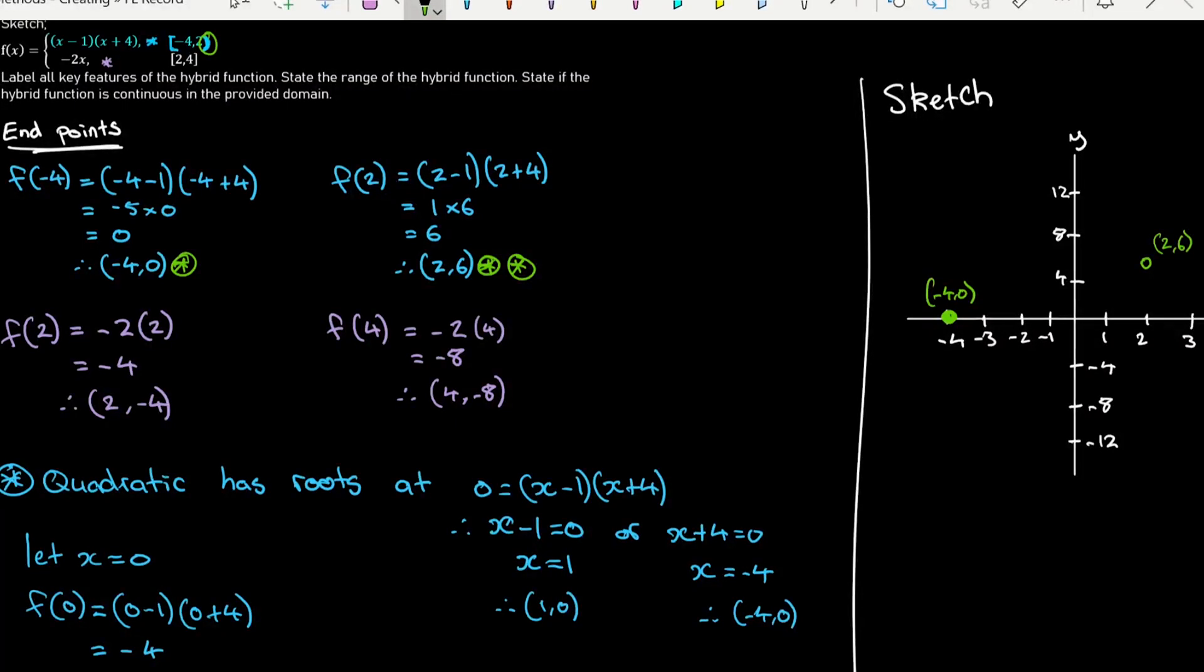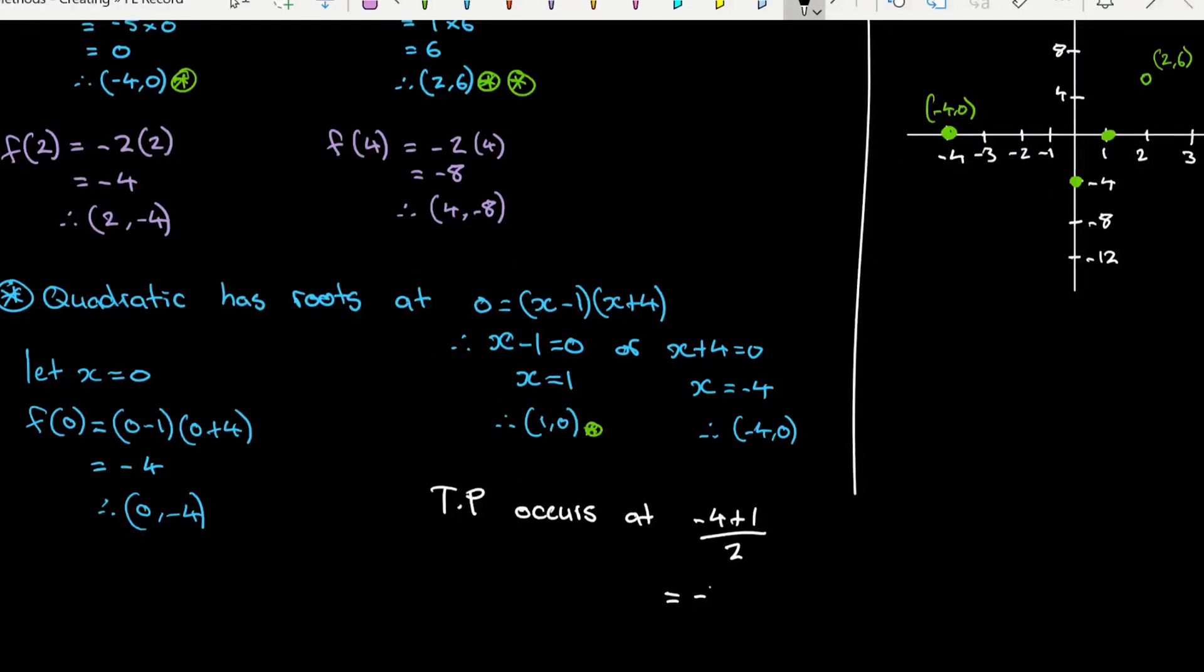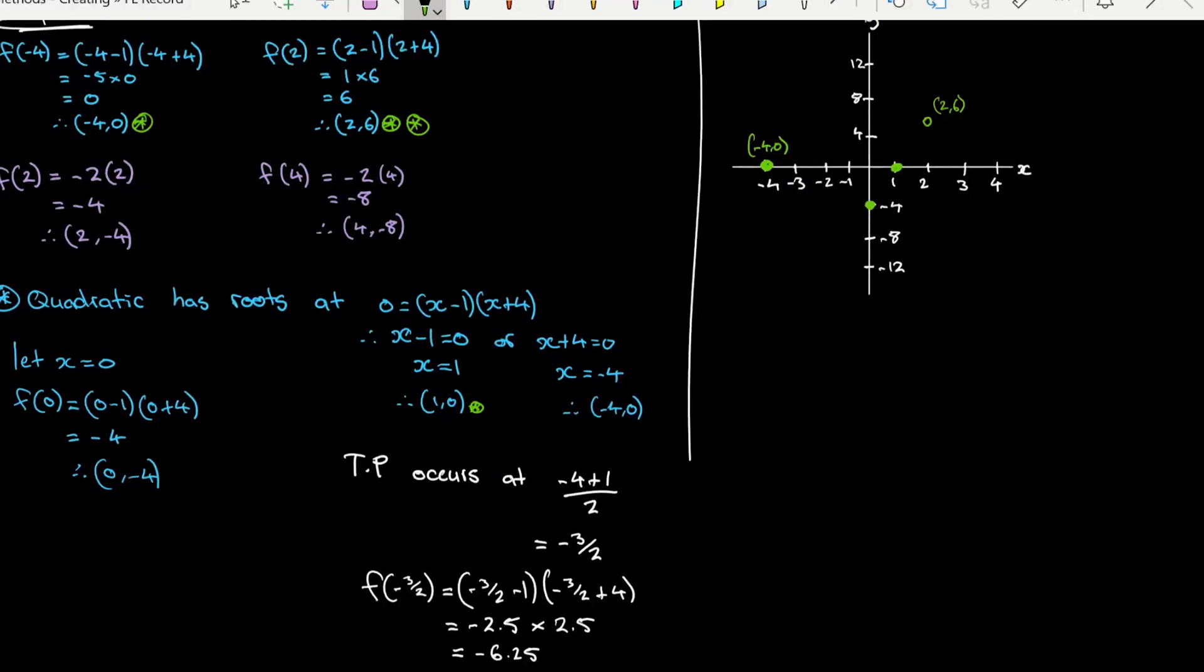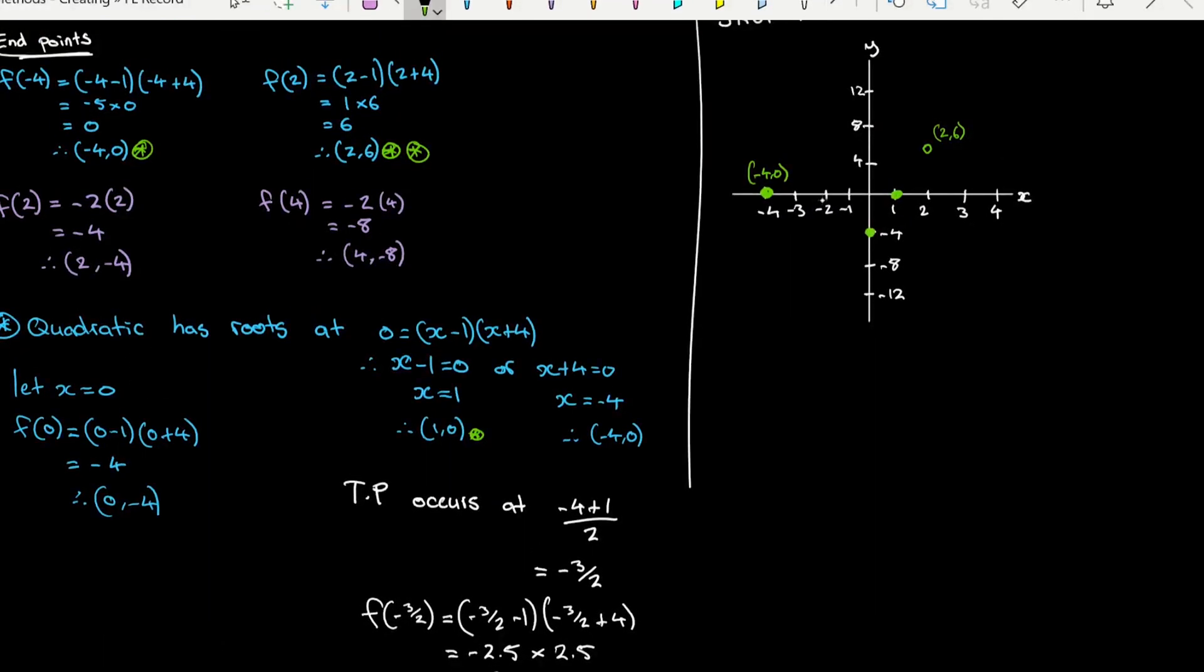Now we know that this quadratic here, it's got roots at 1, so this is going to be a point on the quadratic, and it's got a y-intercept there. Now the turning point—I should really do the working out for the turning point. So I've just quickly worked out the turning point there, and that occurs when x is 1.5, y is equal to negative 6.25.